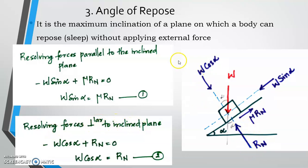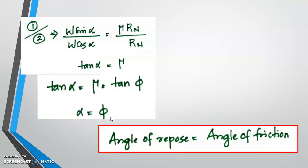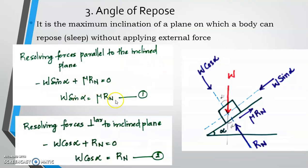Resolving perpendicular to the inclined plane: minus W cos alpha plus Rn equals zero, so W cos alpha equals Rn. This is equation 2. Dividing equation 1 by equation 2: W sin alpha divided by W cos alpha equals mu·Rn divided by Rn.